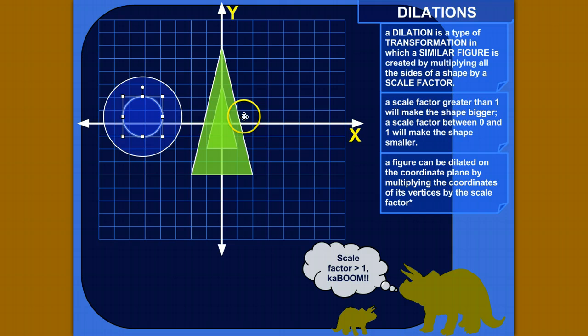You'll see that a scale factor greater than one will make the shape bigger, and a scale factor between zero and one will make the shape smaller.